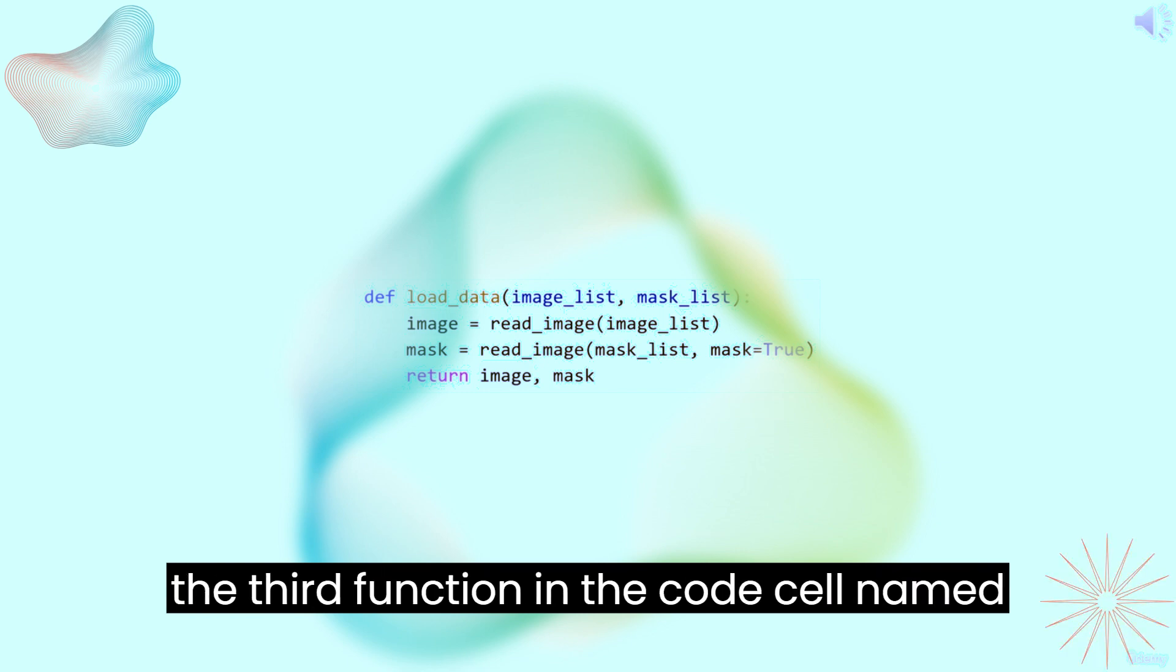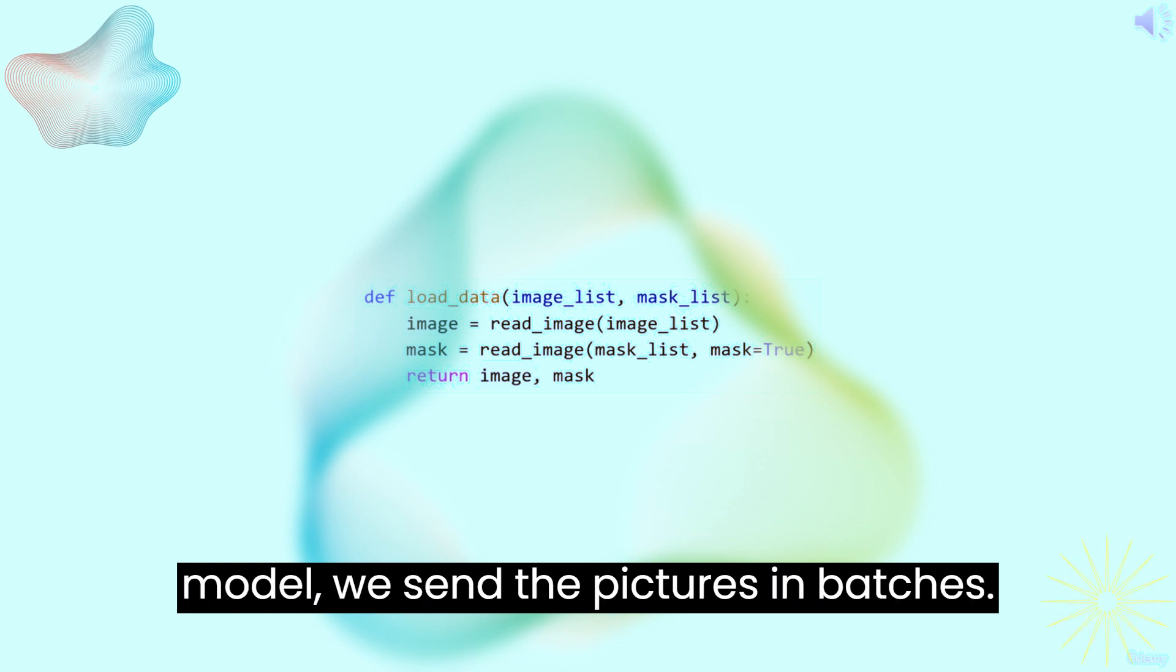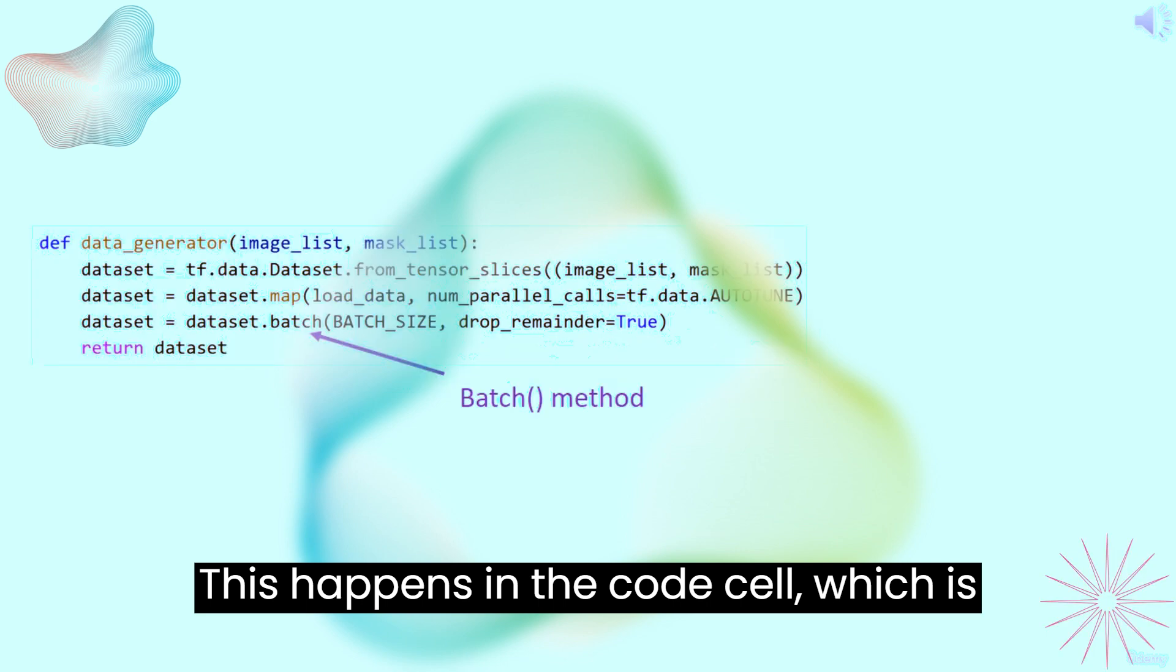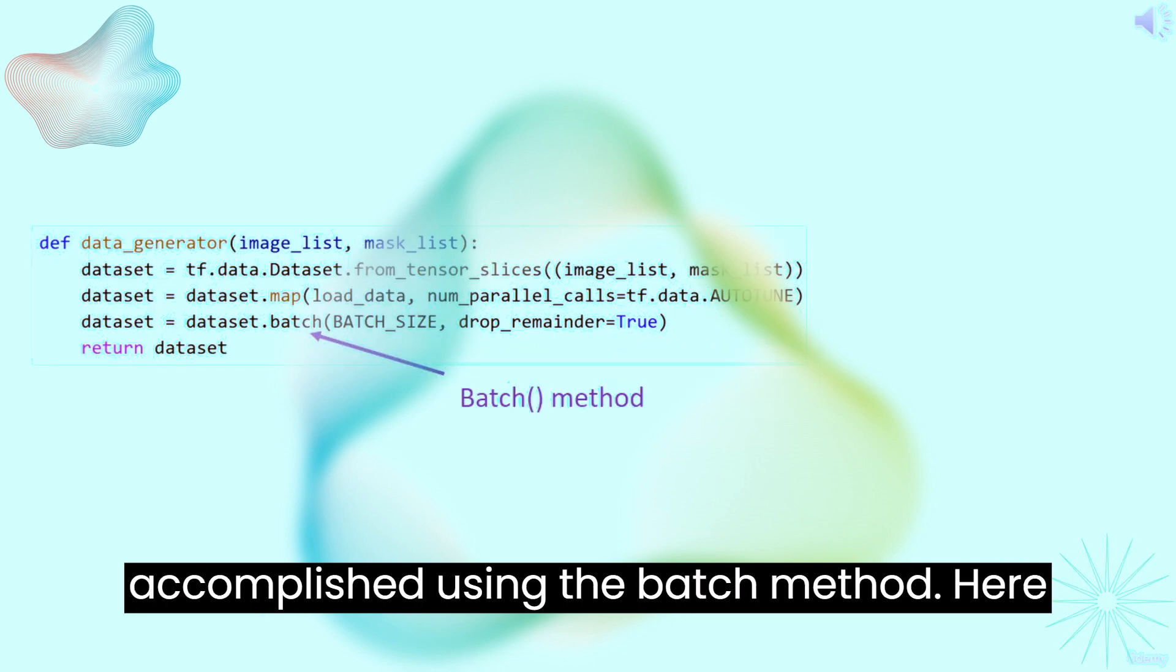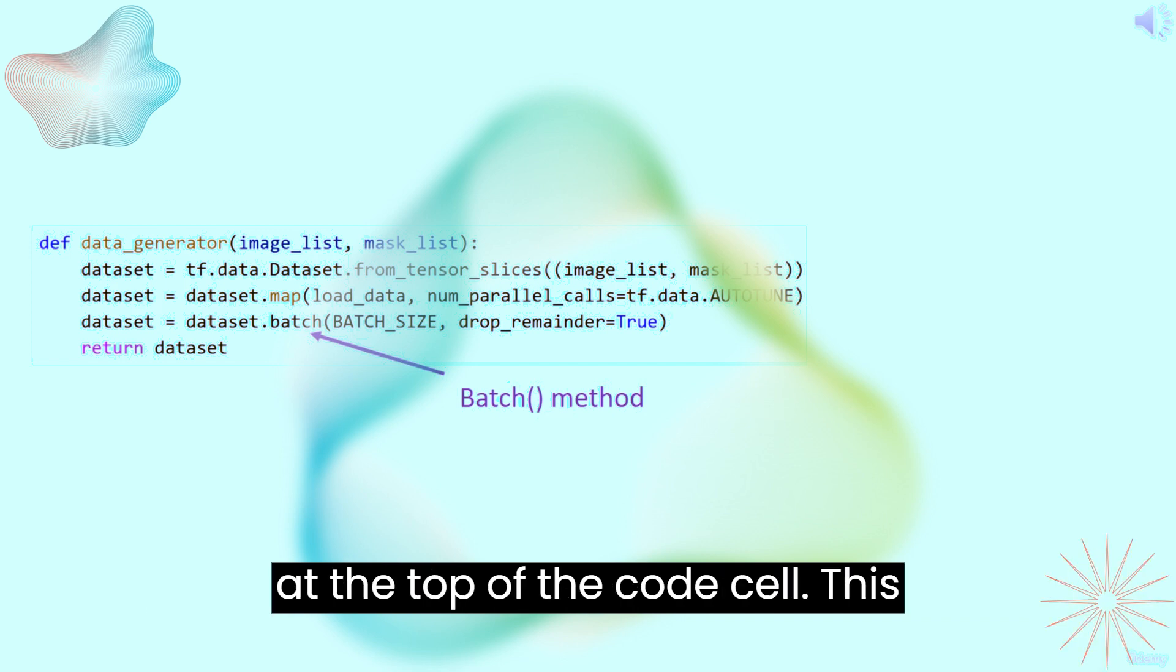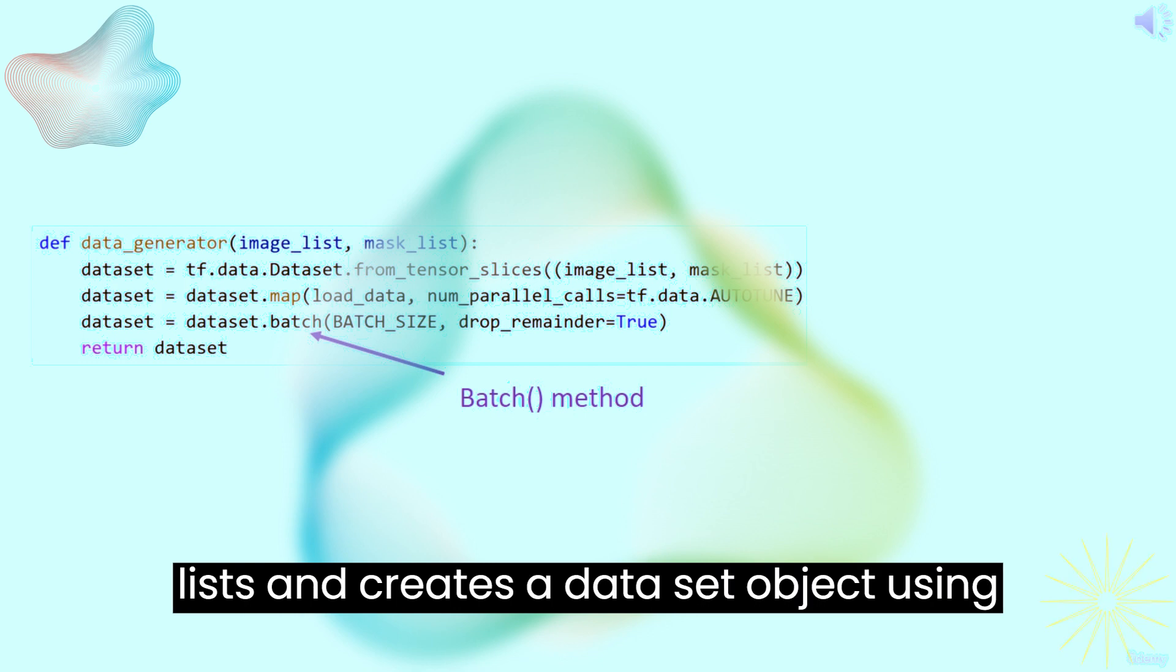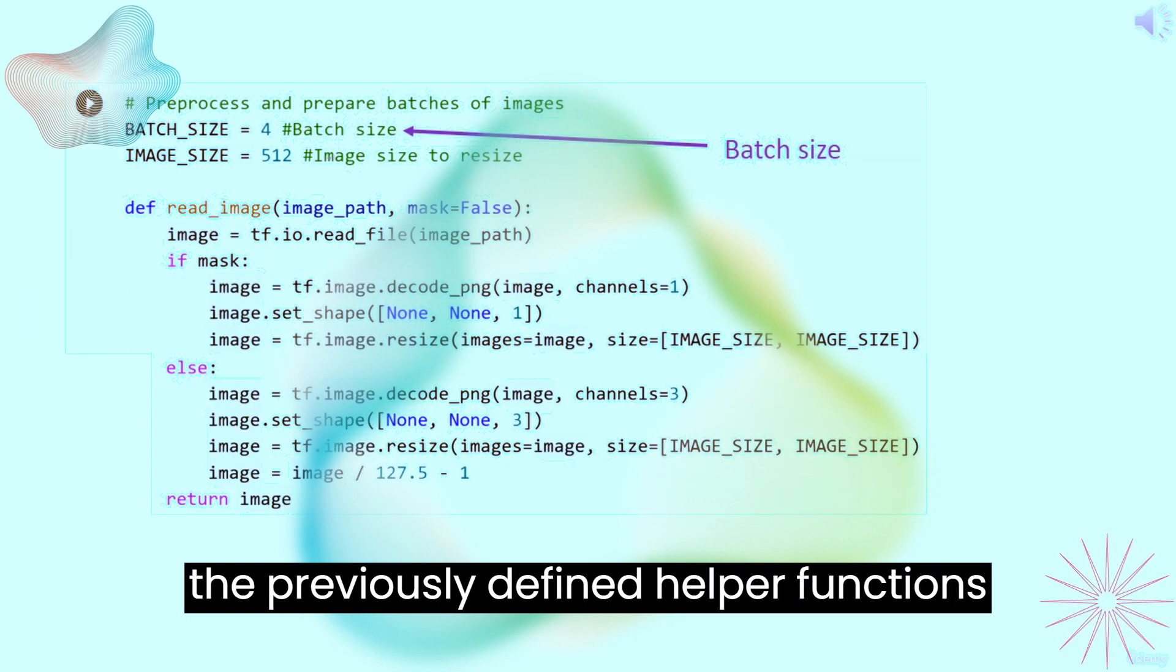Scroll down and see the third function in the code cell named data_generator. Every time we feed our model, we send the pictures in batches. This happens in the code cell which is accomplished using the batch method. Here we send four images per batch as defined at the top of the code cell. This function accesses the image and mask lists and creates a dataset object using the previously defined helper functions.